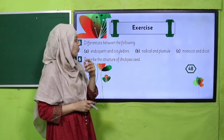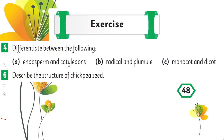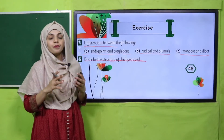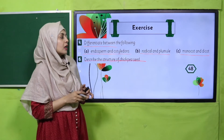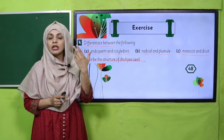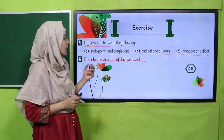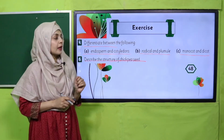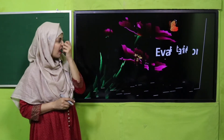For exercise, go to page number 48 and answer the questions: differentiate between endosperm and cotyledon, and between radicle and plumule; monocot vs dicot; and describe the structure of the chickpea seed. Endosperm stores food in monocots; cotyledon is the seed leaf inside the seed. Radicle develops into roots; plumule develops into the stem. You can take help from the comparison table and the book, and draw and label diagrams as well.